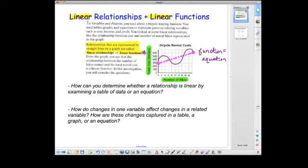While we think about these notes, we're going to think about these two questions. How can you determine whether a relationship is linear by examining a table of data or an equation? And the second question is, how do changes in one variable affect the changes in a related variable? And how are those changes captured in a table, a graph, or an equation? So there's three venues to look at data.